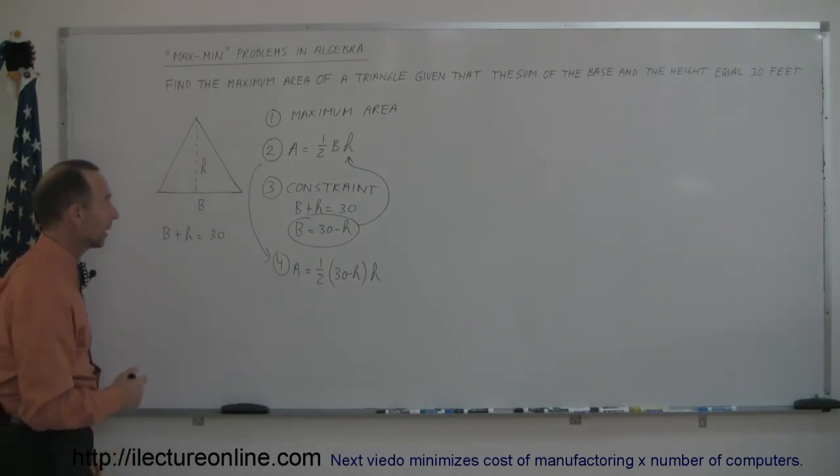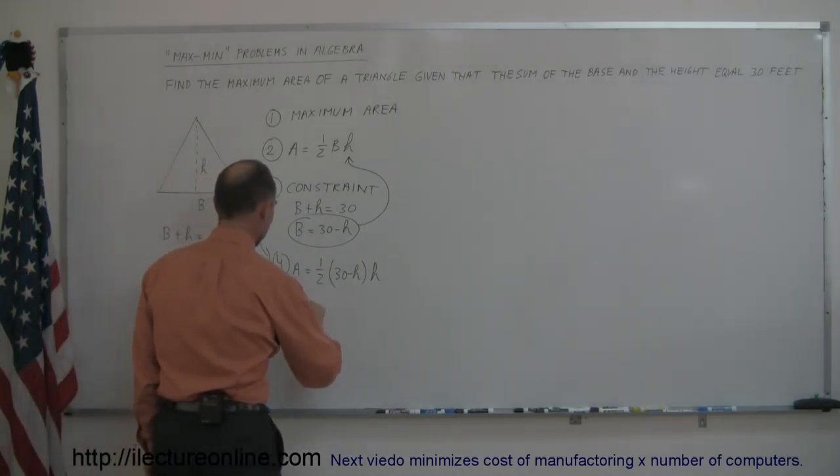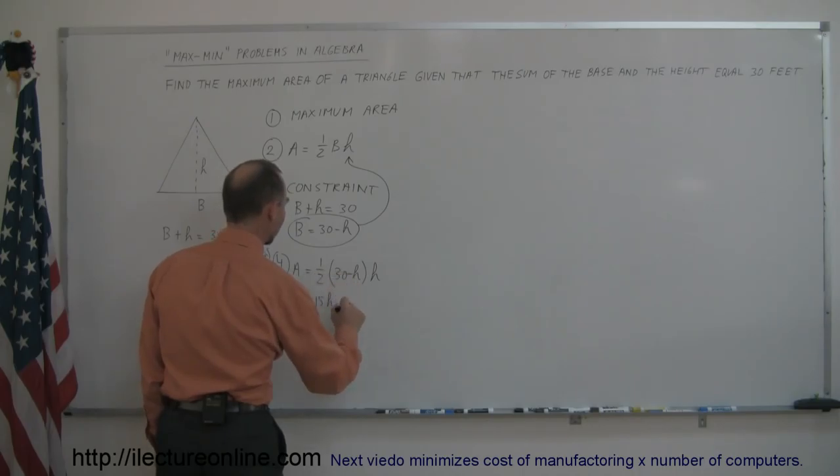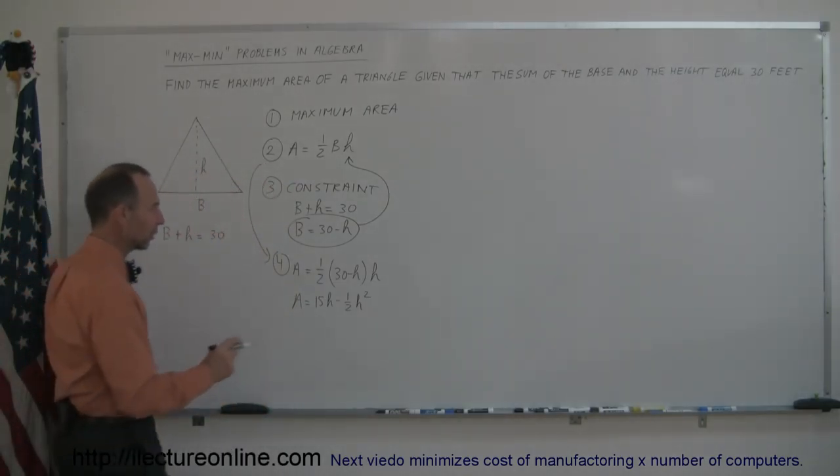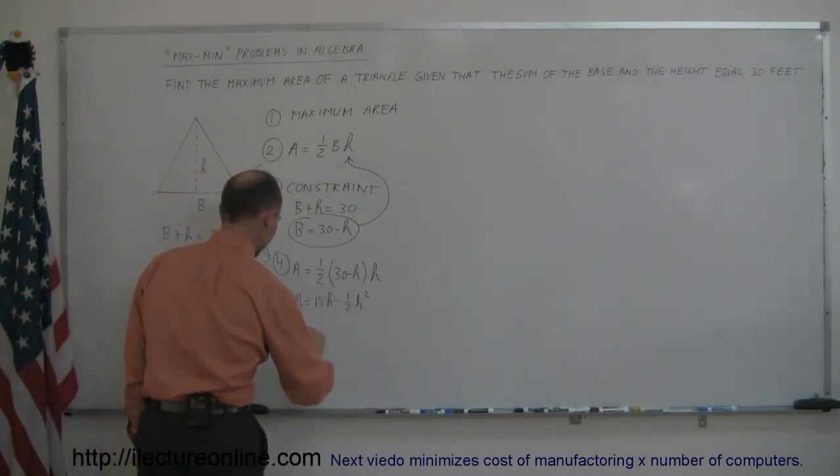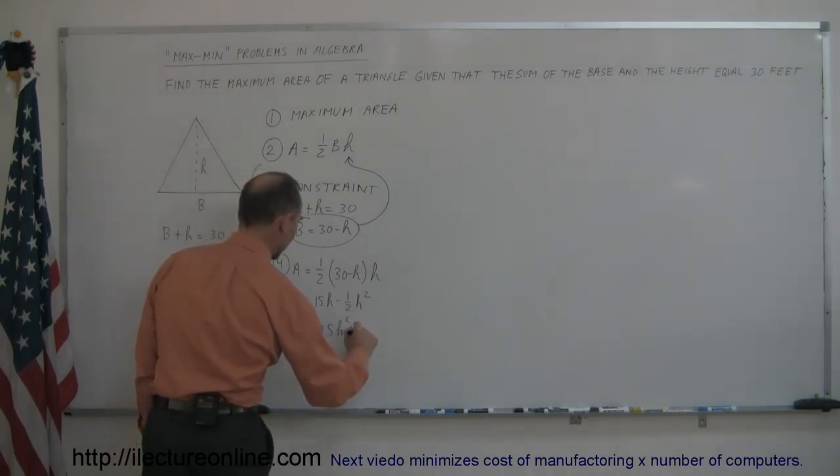Now when we multiply that out, we get the area is equal to one half times 30 times h, which is 15h, minus one half times h squared. And if I rearrange that equation with the square term first, we got A is equal to -0.5h squared plus 15h.